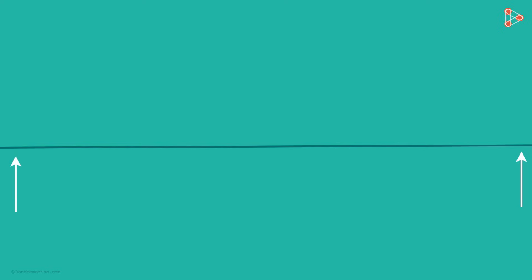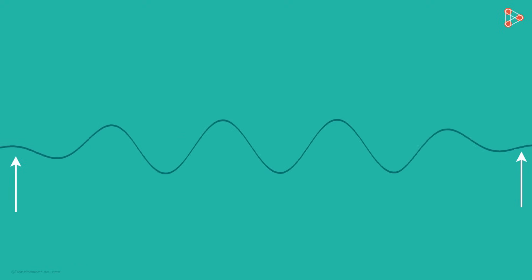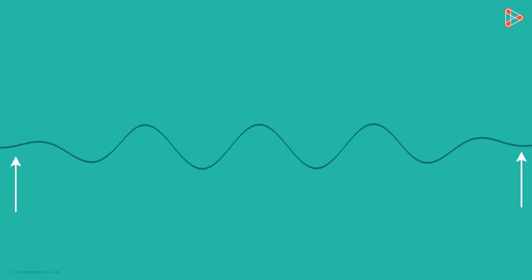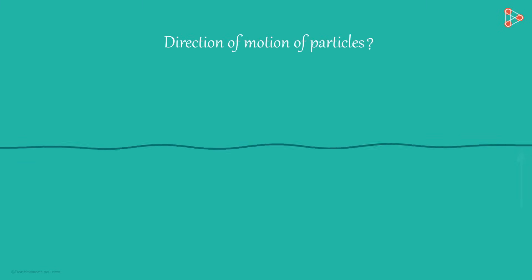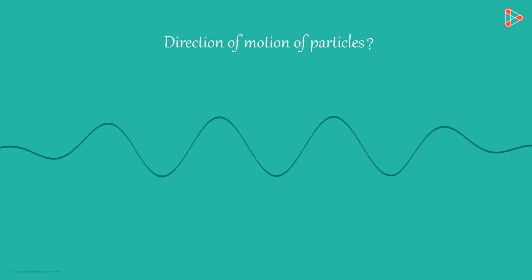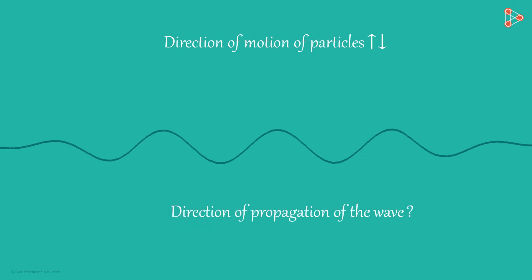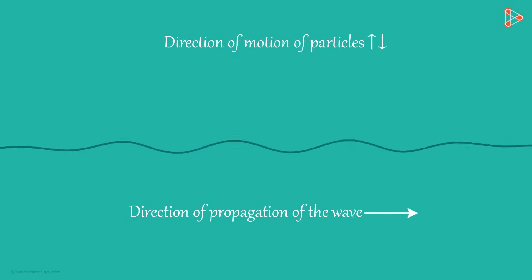Take a string with one end fixed to the wall. This end is fixed at the wall and the other end is in your hand. We see a wave when we give the string an upward jerk from this end. What do you notice? In what direction are the particles of the string moving? Up and down, right? And the direction of propagation of the wave? It's moving to the right.